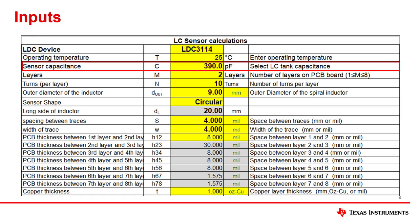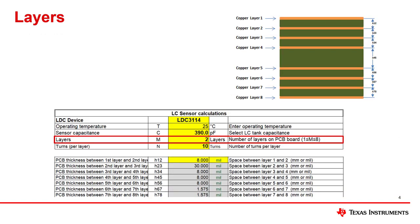The next input is the capacitance, chosen to set the frequency of the sensor based on the coil design. It also has an impact on the RP and Q parameters. I'm starting with 390 picofarads but this can be changed later if needed. The number of layers is typically two or four, limited by the number of layers in the PCB design. Increasing the layers will increase the inductance. I'm using a two-layer design. An example stack-up at the top of the tab shows how the PCB thickness inputs correlate to a PCB design.